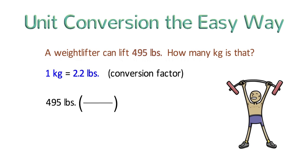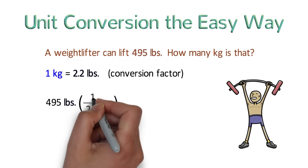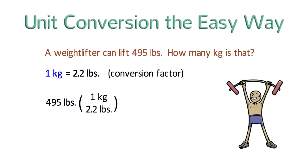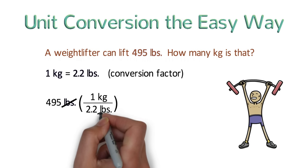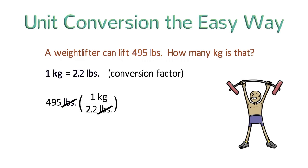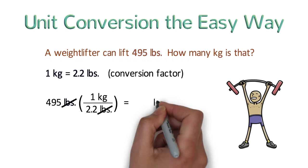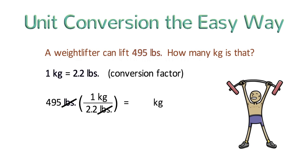The quantity we are starting out with has the units of pounds. So we take 2.2 pounds from the conversion factor and write it on the bottom. Next, because we want to end up with kilograms, we take 1 kilogram from the conversion factor and write it on the top of the fraction. Notice that the pounds that we started out with cancel out with the pounds on the bottom. And the units that we have left on the top are kilograms, which is exactly what we want to convert to.